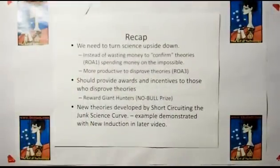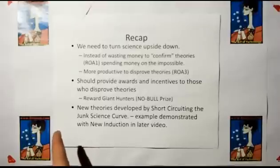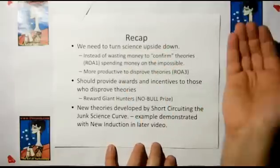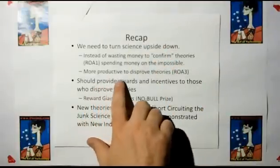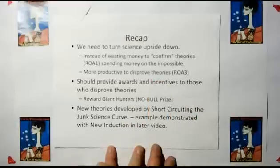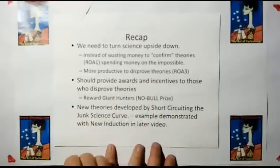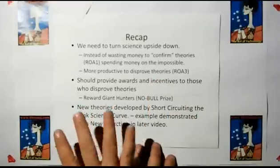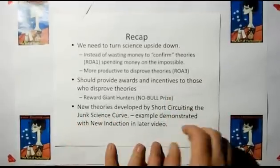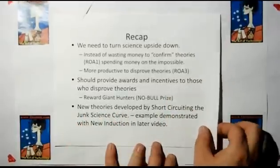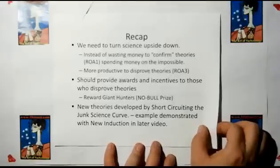We need to turn science upside down. Instead of wasting money to confirm theories — which is spending money on the impossible, because you can never confirm theories — the more productive avenue is to disprove theories. We should provide rewards and incentives to those who disprove theories. Reward the giant hunters with the Nobel Prize. New theories should be developed by short-circuiting the junk science curve so we can have a better showing for our investment in doing research.